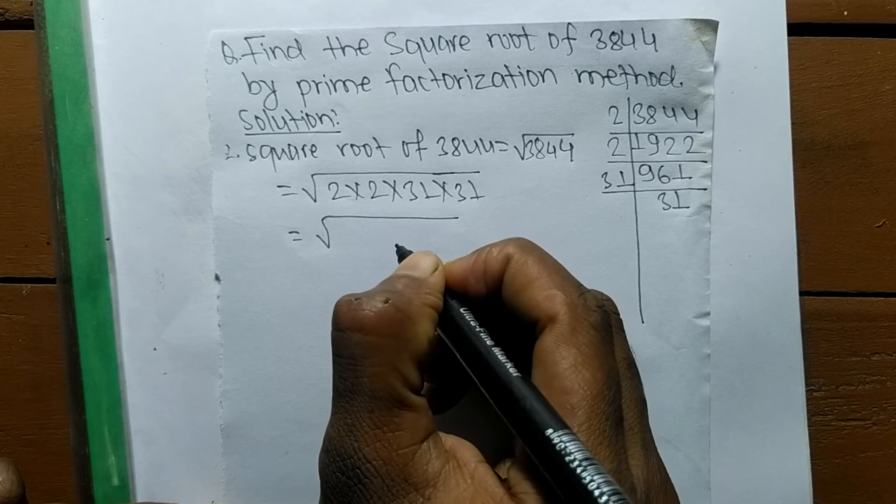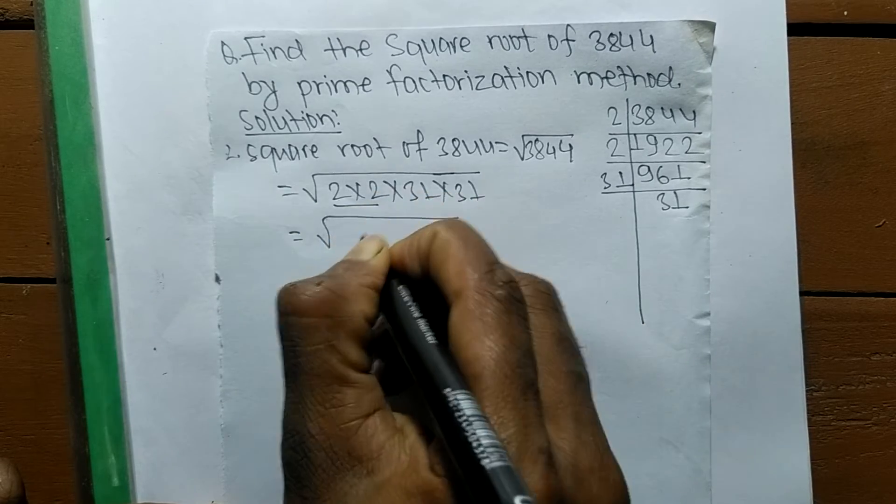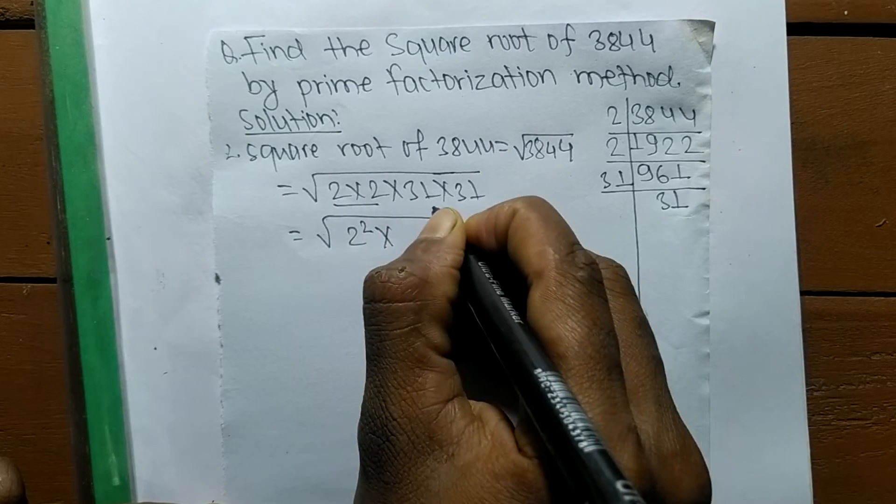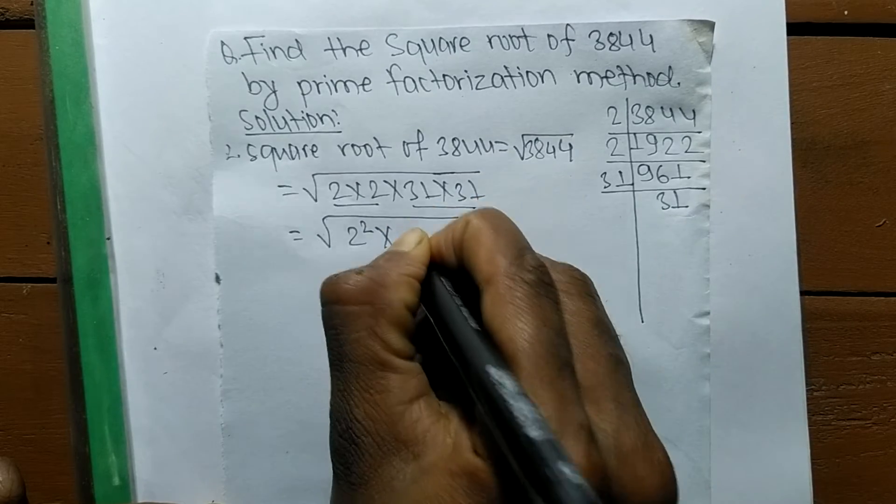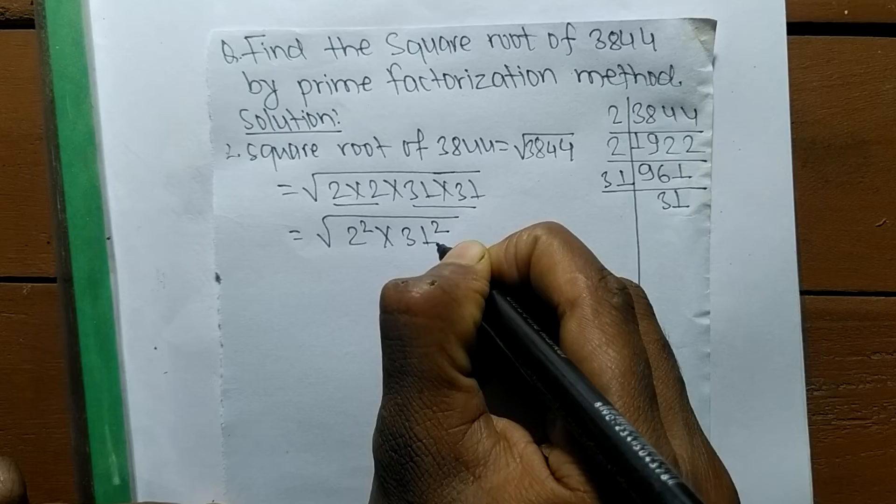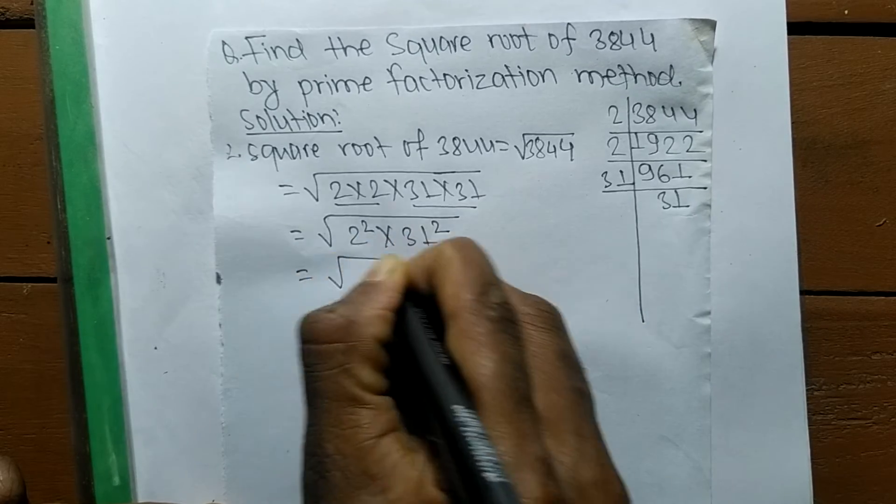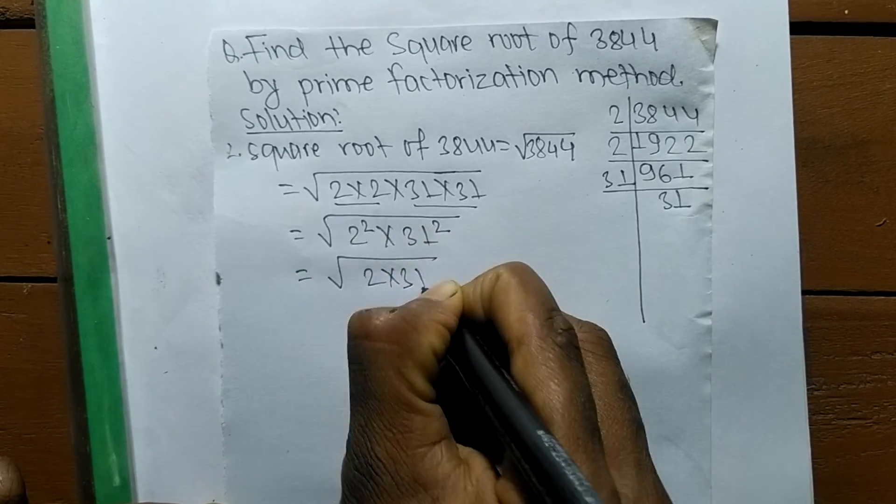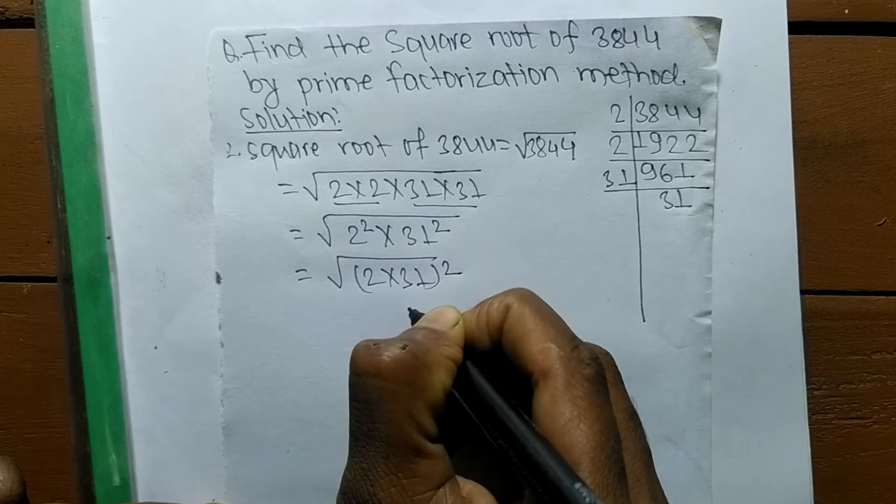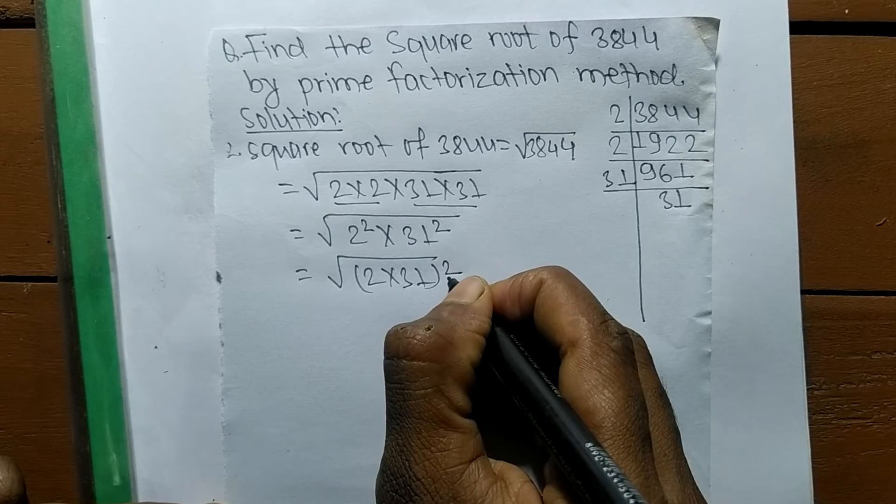After writing all the prime factors, now we have to find the square root of these prime factors. 2 times 2 means it is 2 squared. Square root of 3844 equals 2 into 31 whole square, so we have taken the square as common from both these numbers.